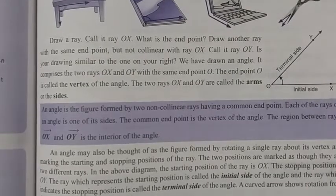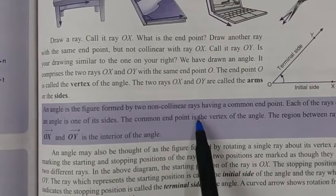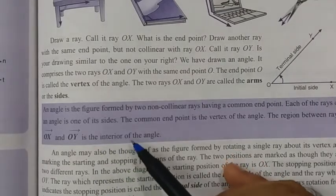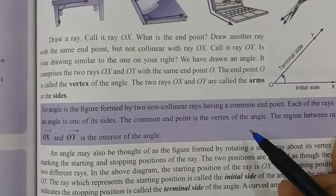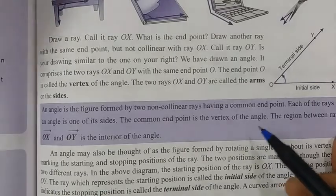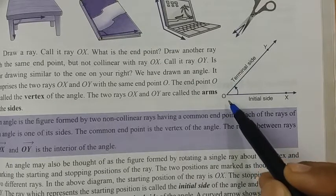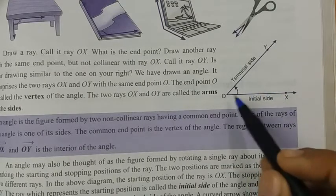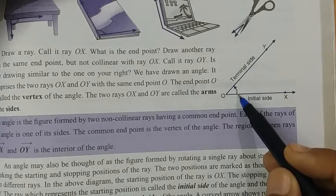What is an angle? Everyone open page number 239. An angle is a figure formed by two non-collinear rays having a common endpoint. Each of the rays of an angle is one of its sides. The common endpoint is the vertex of the angle. The region between rays OX and OY is the interior of the angle. OX and OY are the sides of the angle — the initial side and terminal side — and the space between these two rays is known as the angle.